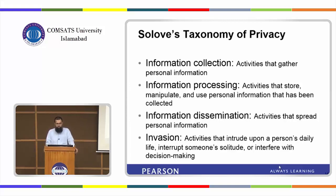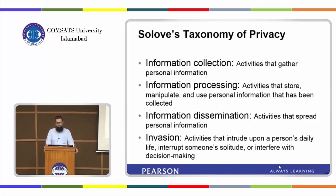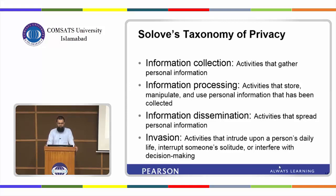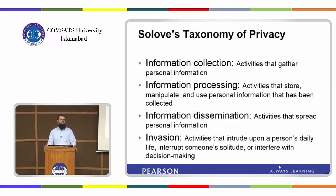The second category is information processing — once we have data, we can process it, infer meanings, find patterns, and manipulate it in different ways. The third category is information dissemination — the distribution of information. When we give our information to an organization, we assume it won't be shared with other organizations.